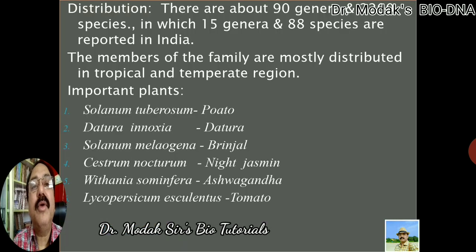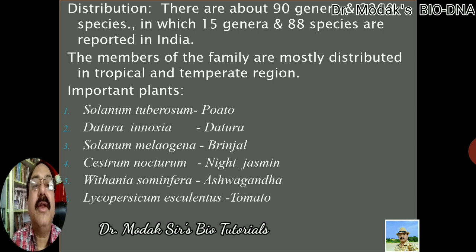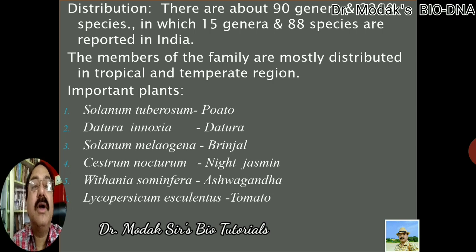Talking about important plants of this family: Solanum tuberosum — potato; the most studied plant Datura inoxia — Datura; Solanum melongena — brinjal; Cestrum nocturnum — night jasmine; Withania somnifera — what we call ashwagandha, which is a medicinally important plant; and Lycopersicum esculentum — tomato.